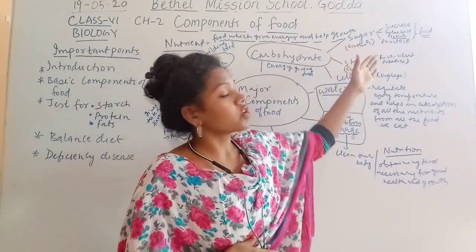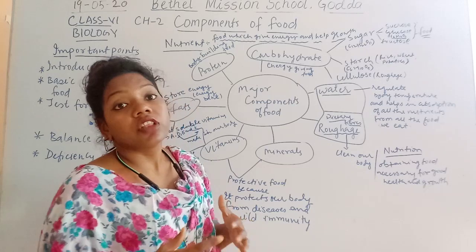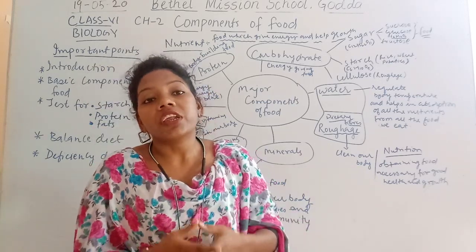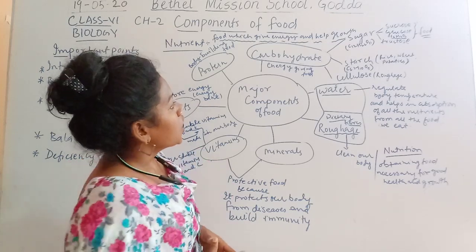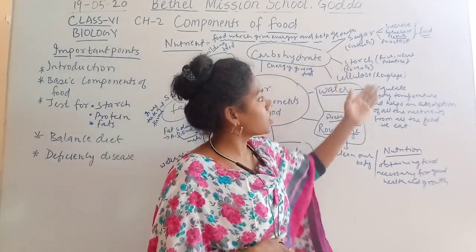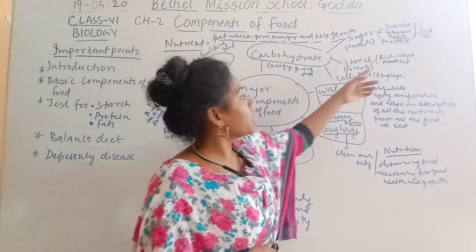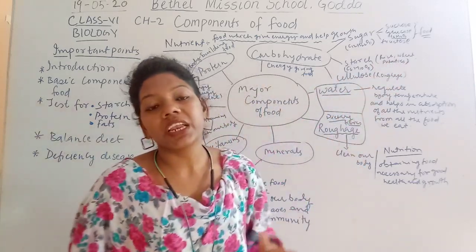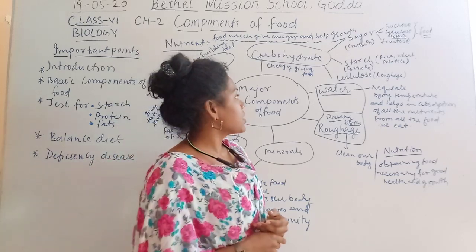Sucrose, glucose, and fructose are mainly found in our body after absorption, when they are transported into different parts of the body. Then, starch mainly comes from rice, wheat, and potatoes — that means it mainly comes from plants.